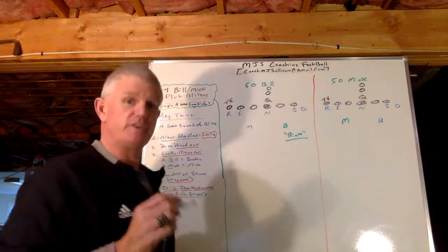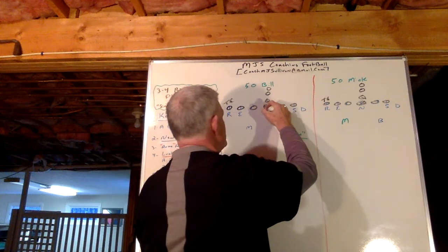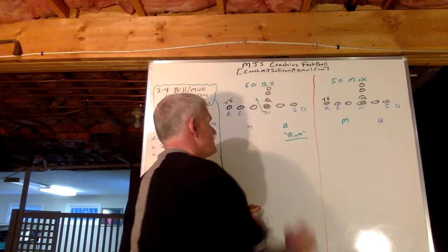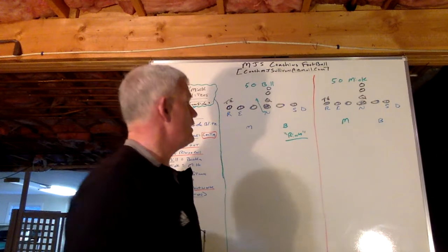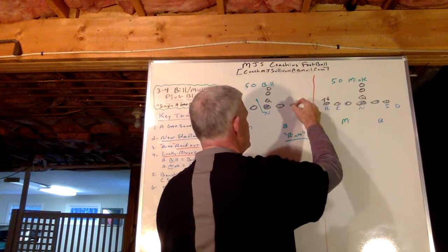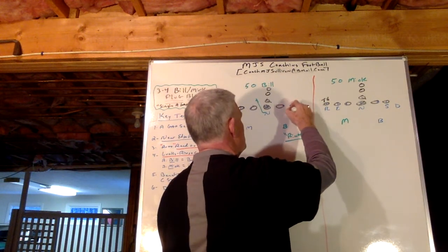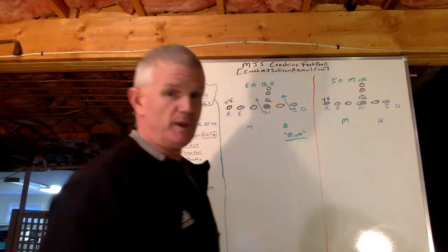Well, that tells the nose on the snap to slant A gap away from the call. And that tells the defensive end on the side of the call to slant the B gap.